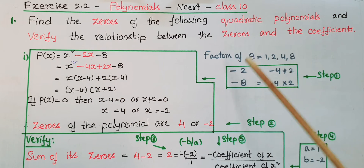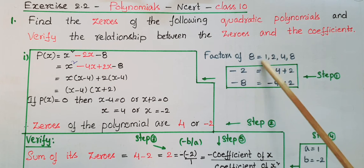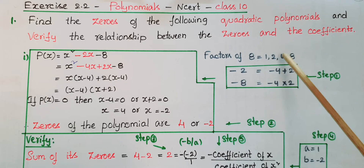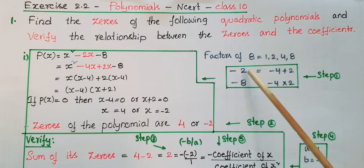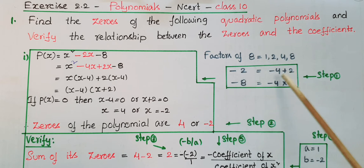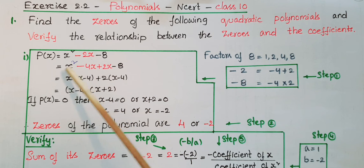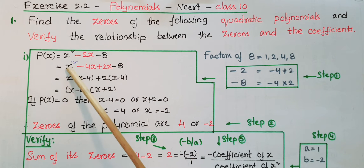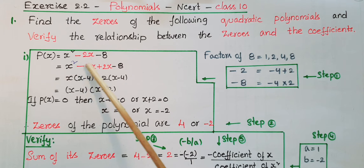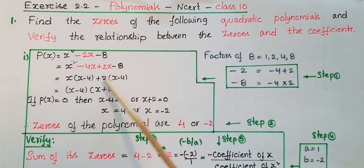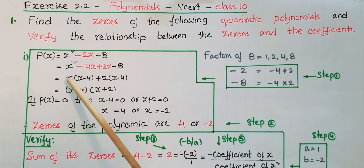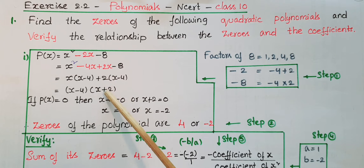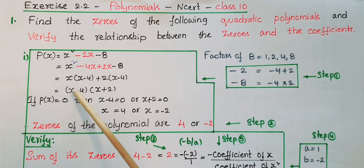The factors of 8 are 1, 2, 4, 8. You need two numbers that add to -2 and multiply to -8. Those numbers are -4 and 2. So x² - 2x - 8 = x² - 4x + 2x - 8. Grouping: x(x - 4) + 2(x - 4), giving (x - 4)(x + 2).